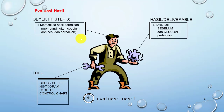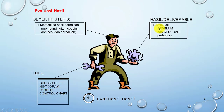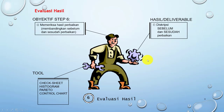Tujuan dari langkah ke-6 adalah memeriksa hasil perbaikan dengan membandingkannya sebelum dan sesudah perbaikan. Alatnya adalah cek sheet, histogram, pareto, ataupun kontrol chart. Hasilnya adalah deskripsi sebelum dan sesudah perbaikan.